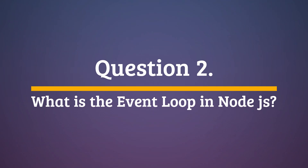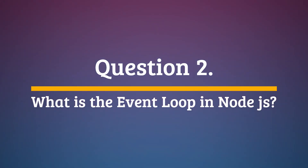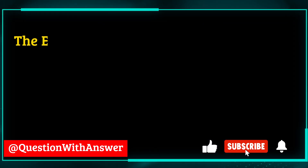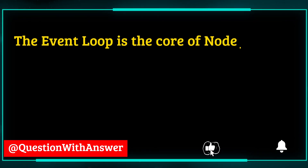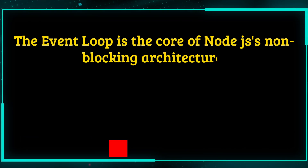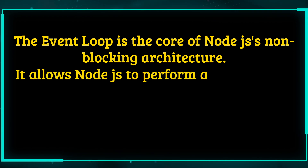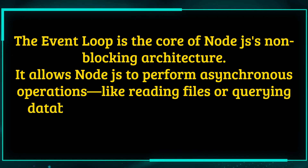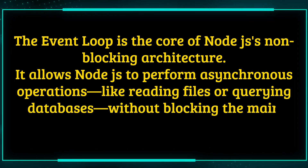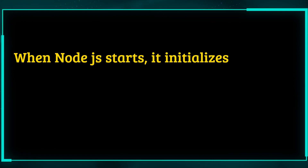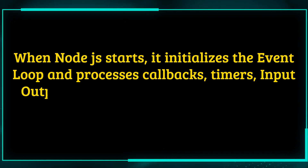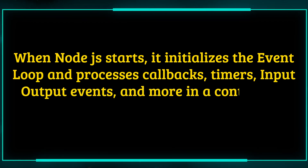Question 2. What is the event loop in Node.js? Answer. The event loop is the core of Node.js's non-blocking architecture. It allows Node.js to perform asynchronous operations, like reading files or querying databases, without blocking the main thread. When Node.js starts, it initializes the event loop and processes callbacks, timers, input-output events, and more in a continuous cycle.